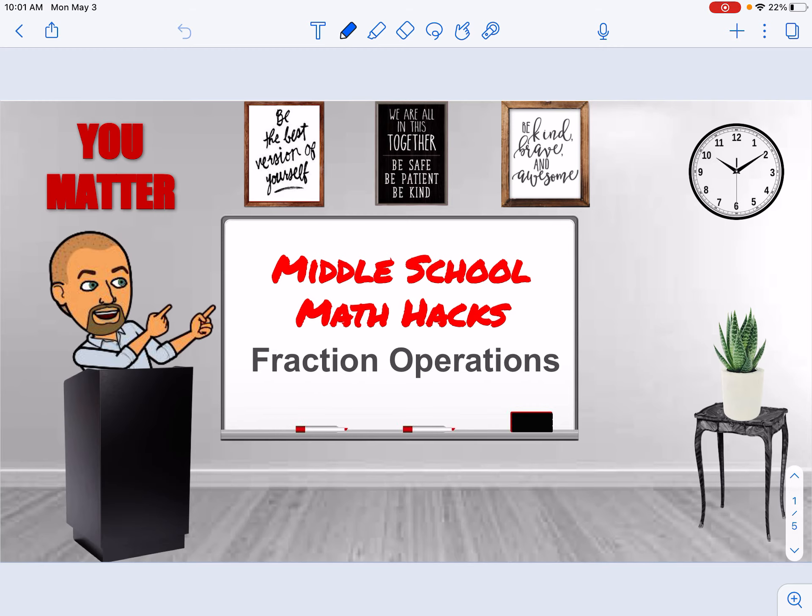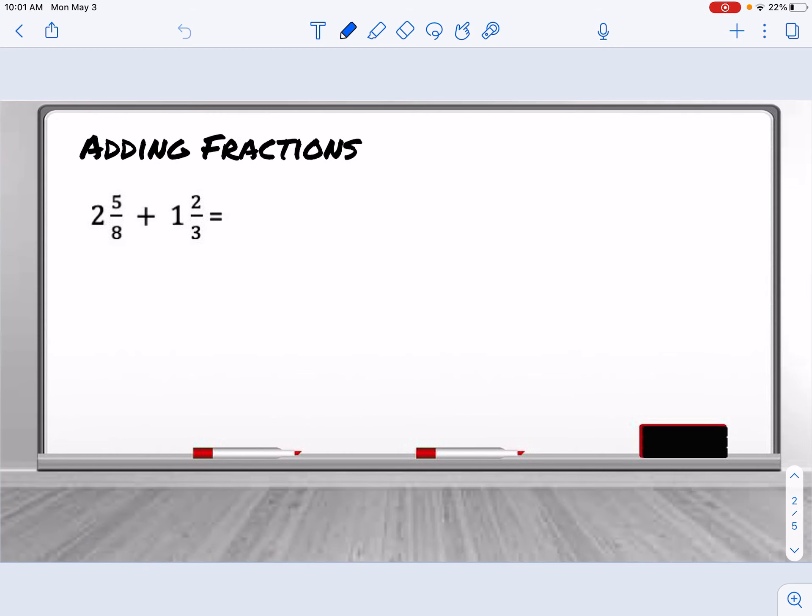Middle School Math Hacks, Fraction Operations. Remember, when we are adding fractions, we have to have common denominators. So we're going to set up our problem vertically. 2 and 5 eighths plus 1 and 2 thirds. I need to find a common denominator between 8 and 3, and that's going to be 24.